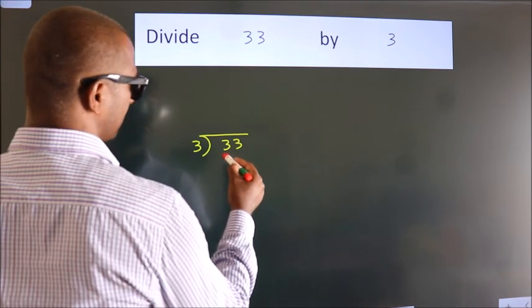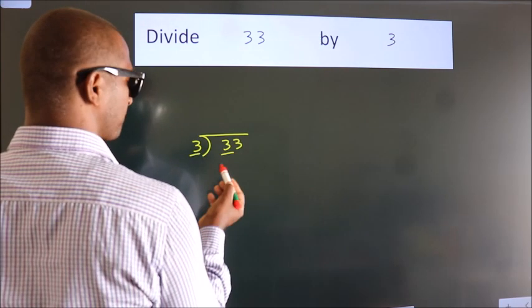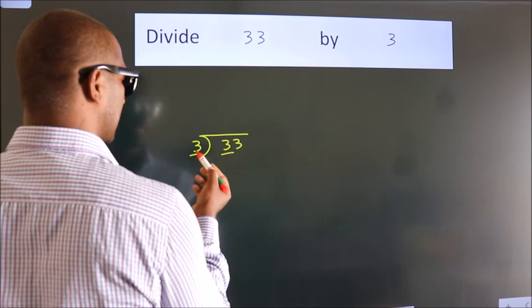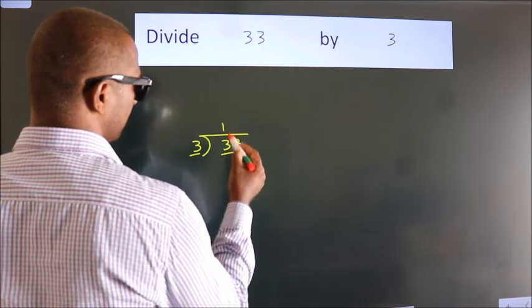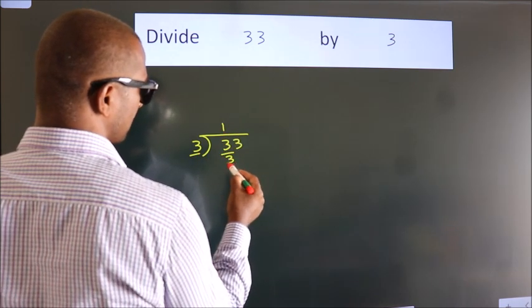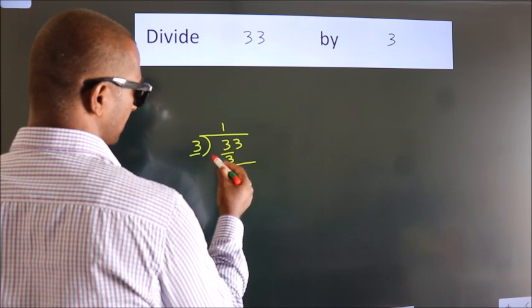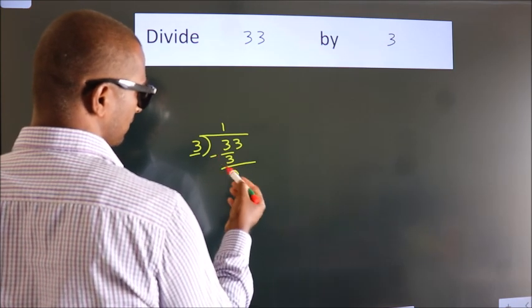Here we have 3, and here 3. When do we get 3? In the 3 times table — 3 once is 3. Now we should subtract, and we get 0.